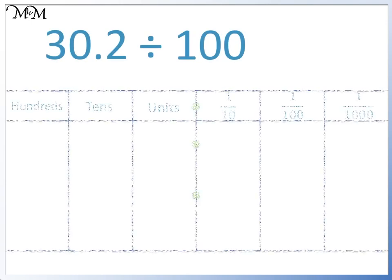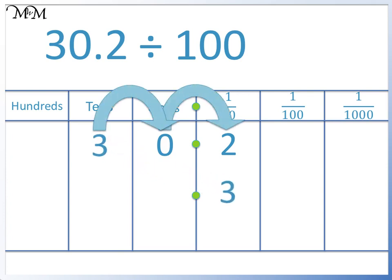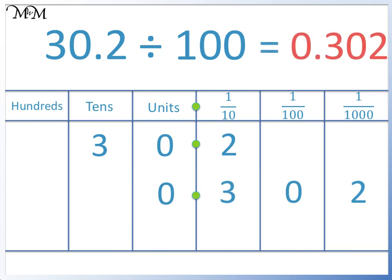30.2 divided by 100. We move each digit two places to the right. Starting with the 3: 1, 2. We move the 3 to the tenths column, the 0 to the hundredths column, and the 2 to the thousandths column. There aren't any digits in front of the decimal point, so we write in a 0. We have 0.302. 30.2 divided by 100 equals 0.302.